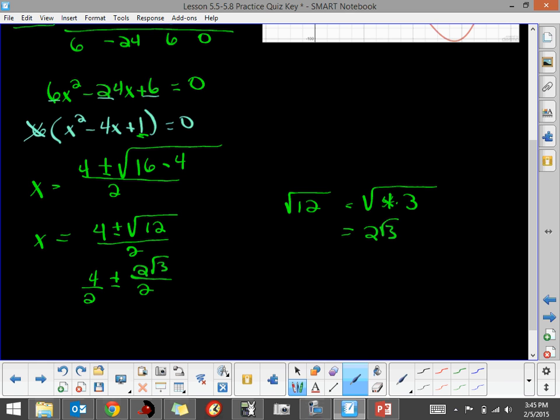And then I'm going to simplify those. A 4 divided by 2 is 2, plus or minus the square root of 3. And that's my other x values that I'm getting from the graph.